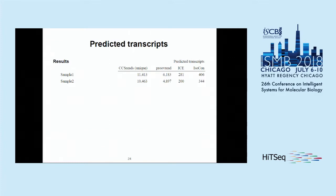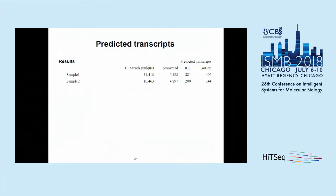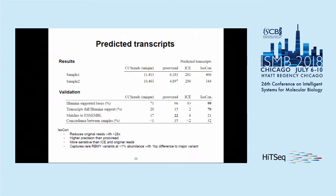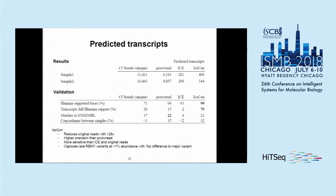We show the number of unique sequences predicted for four different methods across two sequenced individuals: raw CCS reads, ProveRead (which uses Illumina reads to error-correct), PacBio's ICE algorithm, and IsoCon. We don't have a ground truth value, so we assess quality using three techniques: Illumina read support, matches to existing databases, and the number of identical predictions between the two samples.